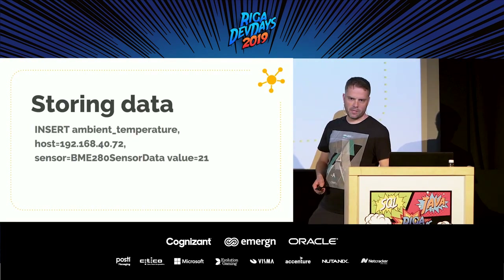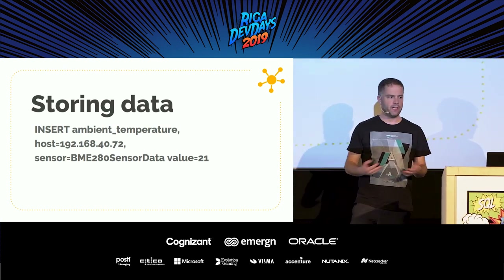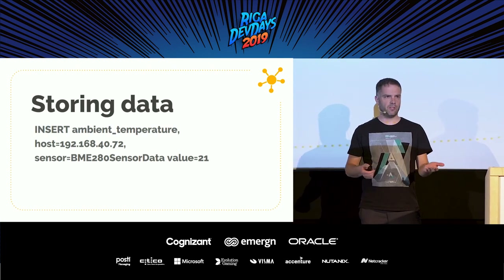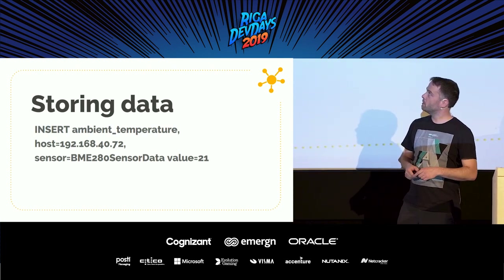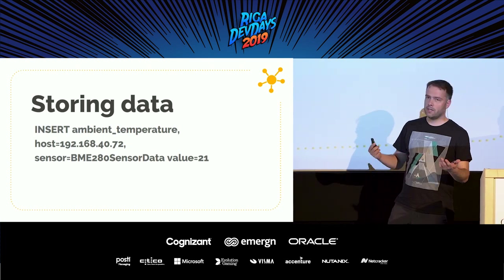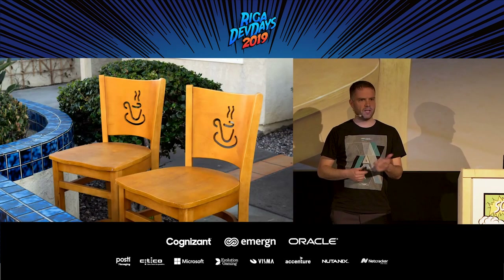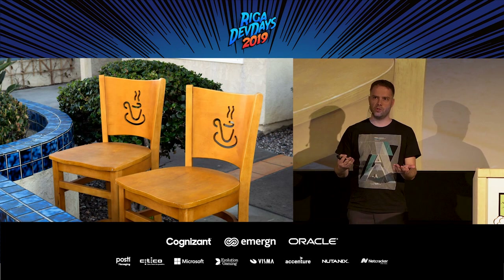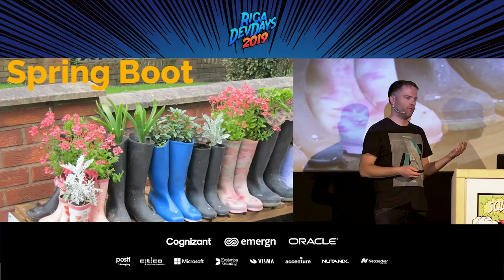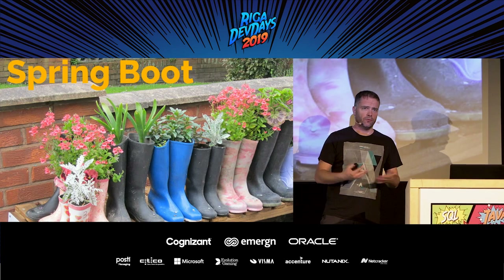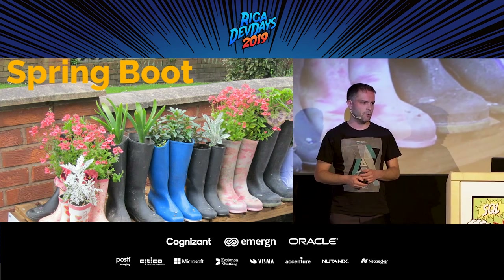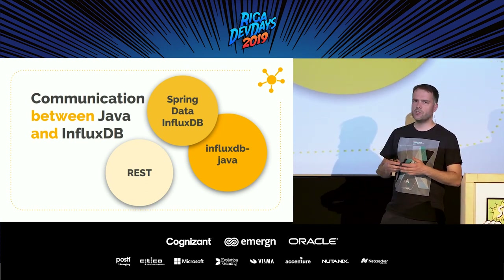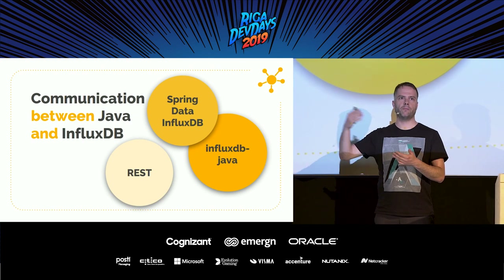If I want to insert data in the database, I can do it in the same way — I can create a query. Again, it looks quite similar to SQL: we have insert statements, so I can basically say insert this information into the ambient temperature, and then I'm good to go. But I'm a Java developer, so I didn't want to insert and retrieve everything manually. I want to use Java for it, and therefore I use Spring Boot — it works quite easily and has a nice wrapper around it. We're going to look at three different solutions to send data to or retrieve data from InfluxDB.